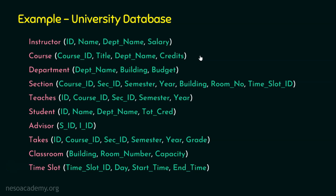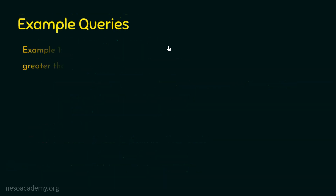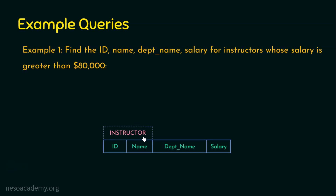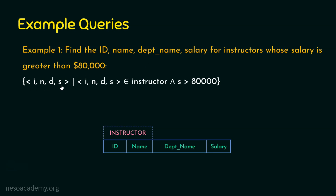All these four attributes are available in the instructor relation itself. Let me bring in the instructor relation schema here. The instructor relation contains four attributes: id, name, department name, and salary. Since we want to retrieve all four attributes, this is going to be a straightforward query. Domain relational calculus uses domain variables instead of tuples, so I am going to create domain variable i for id, n for name, d for department name, and s for salary.